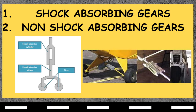For shock-absorbing gear, the shock energy is altered and transferred throughout the airframe at a different rate and time than the single strong pulse of impact. Non-shock-absorbing gears, on the other hand, absorb shock by converting the energy into heat energy. Non-shock-absorbing gears are also called bungee cords.